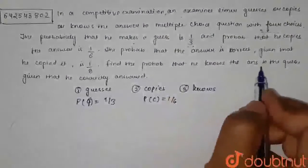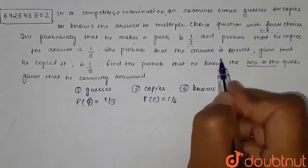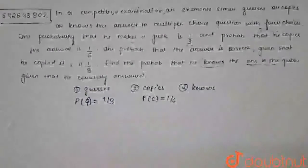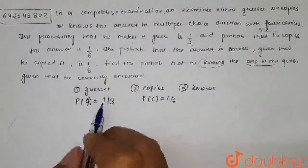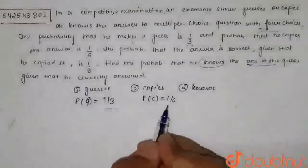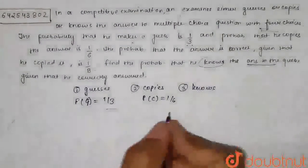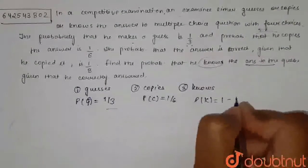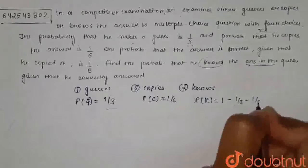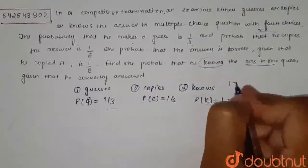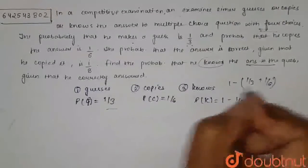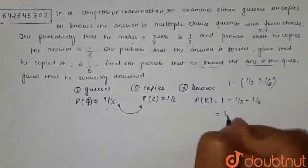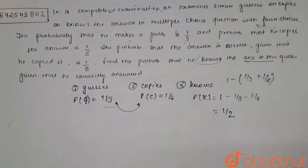And the probability that he knows the answer, given that the question was correctly answered — we need to find this. We know P(G) = 1/3, P(C) = 1/6. The probability that he knows the answer is one minus one by three minus one by six, which equals one by two.